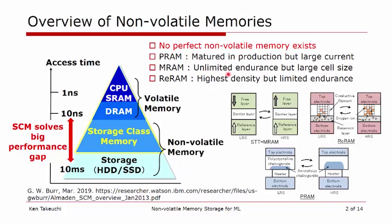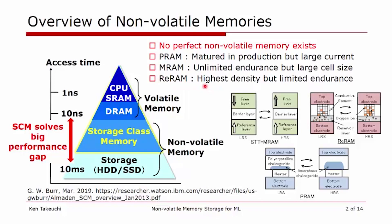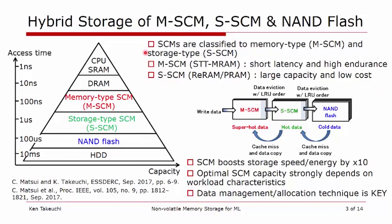We will split the emerging storage class memory into two parts. The first is memory-type SCM, and the second is storage-type SCM. In the case of M-SCM, the most promising candidate is STT-MRAM — they are very fast, with short latency and large endurance, but capacity is small because of the large cell size. For S-type SCM, it has large capacity at low cost, but endurance is still limited. So we need a tri-hybrid structure: a non-volatile cache, M-SCM, S-SCM, and as primary storage, NAND flash.